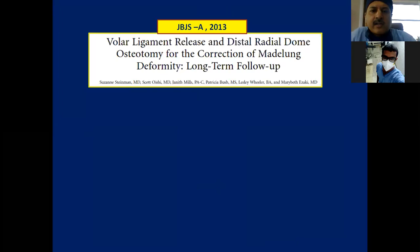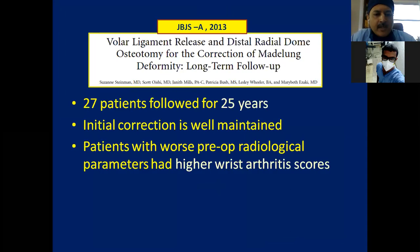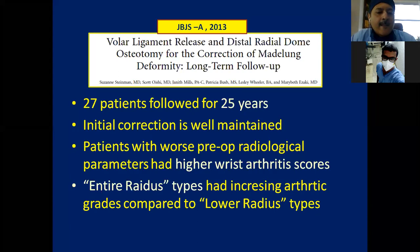A very good paper in JBJS 2013 from Texas Scottish Rite Hospital by Marybeth Ezaki published results of volar ligament release and distal radial dome osteotomy for Madelung deformity with long-term follow-up: 27 patients followed for 25 years. Initial correction was well maintained. Patients with worse pre-operative radiologic parameters and higher arthritis risk scores — particularly mesomalic or entire radius types — had increasing arthritic grades compared to the distal radius type. This is worth explaining to parents at outset: even with surgery, wrist arthritis may develop due to the morphology of the disease.